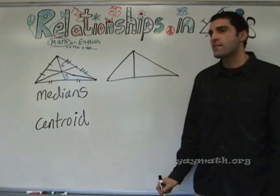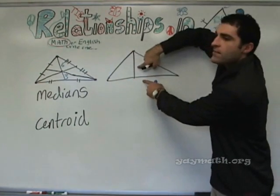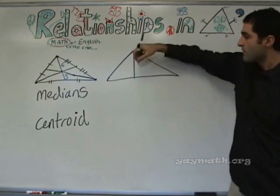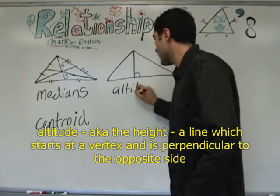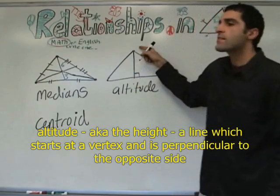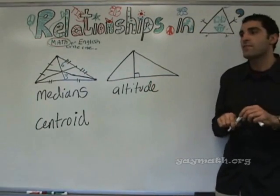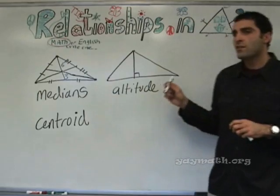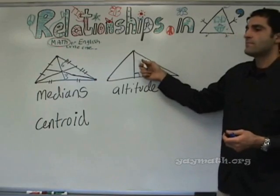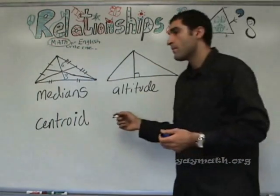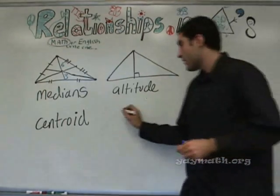The altitude does start at a vertex, but it goes towards the opposite side, and it is perpendicular. So this is the altitude. Altitude starts at the vertex and goes to the opposite side, perpendicular. Basically, it's the height of the triangle. Remember back in Algebra 1 when you were talking about area of a triangle — one-half base times height? It's the height. Does it have to be a right angle? Yes, always a right angle. Right angles make it an altitude.